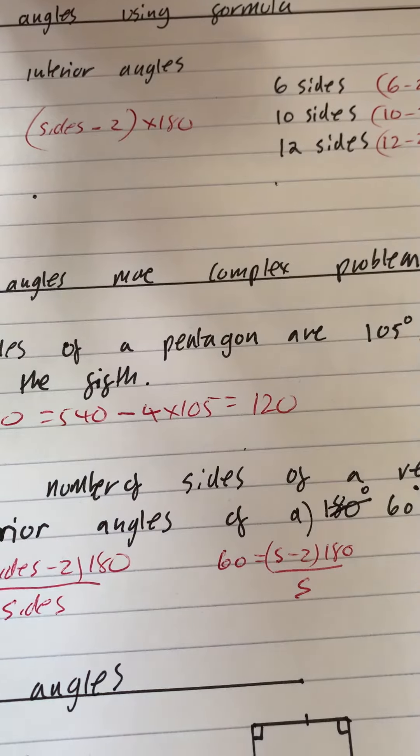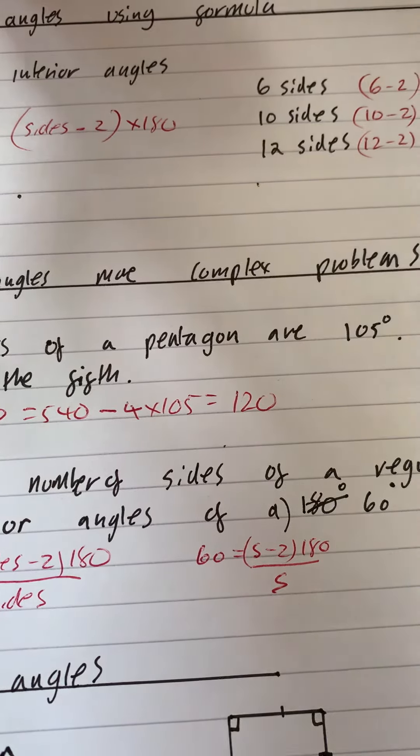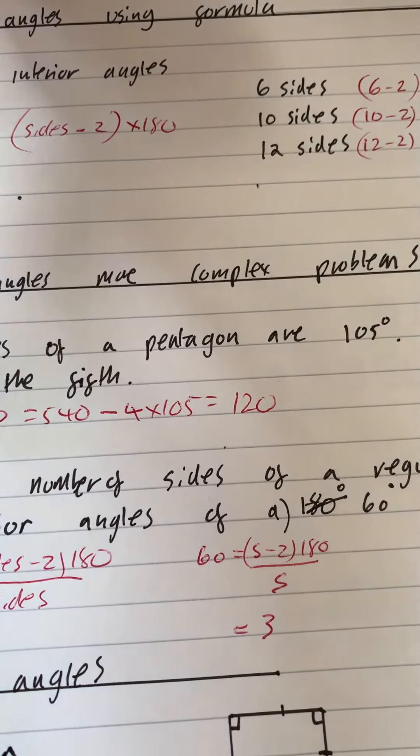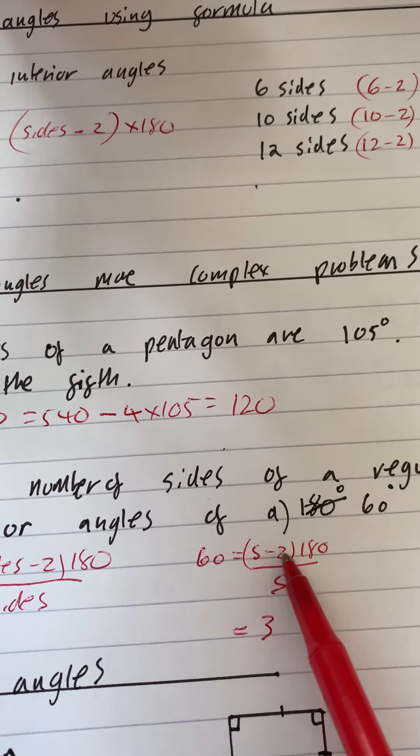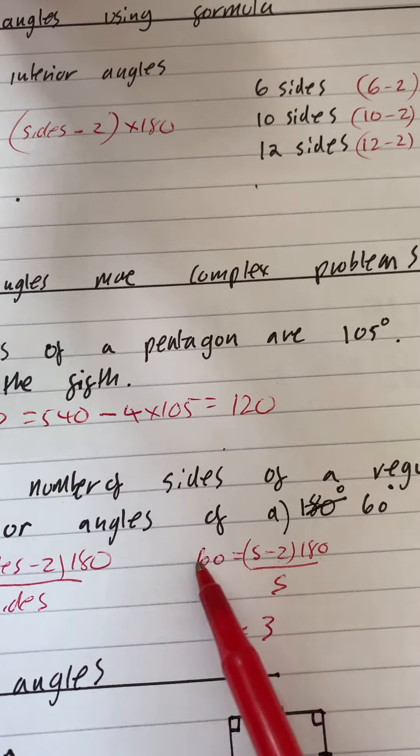Now, 60 is a shape that you should know. If the interior angle's all the same, there's only one shape where they're all going to be 60, and that is a triangle, so it's a three-sided shape. And if you put three into here, three take away two is one, times 180, 180, divided by three gives you 60.